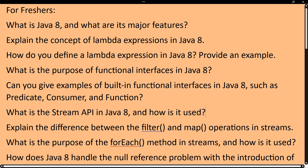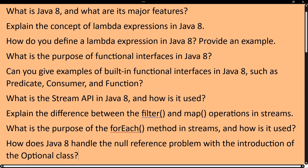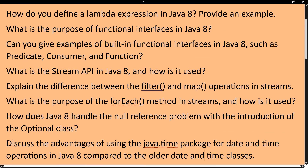The next question is: what is the Stream API in Java 8 and how is it used? The next question is: what is the difference between the filter and map operations in streams? We have multiple methods in the Stream API — filter, map, forEach, collectors, and others. The next question is: what is the purpose of the forEach method in a stream and how is it used? These are fresher-level questions, though some interviewers may ask them for experienced candidates as well.